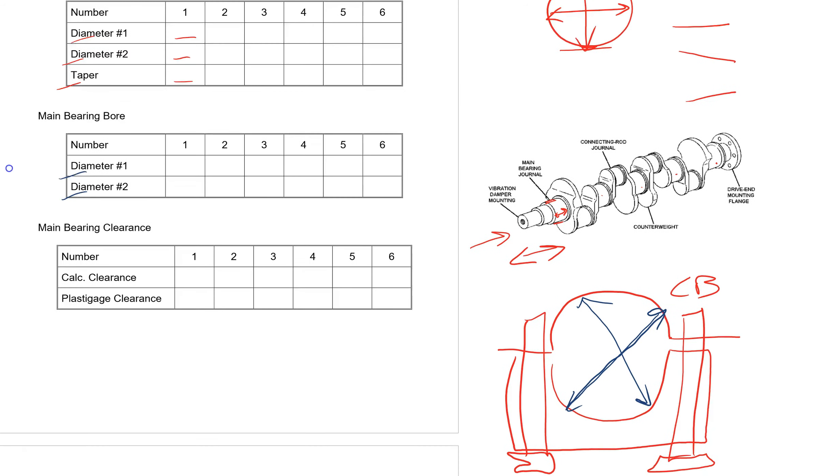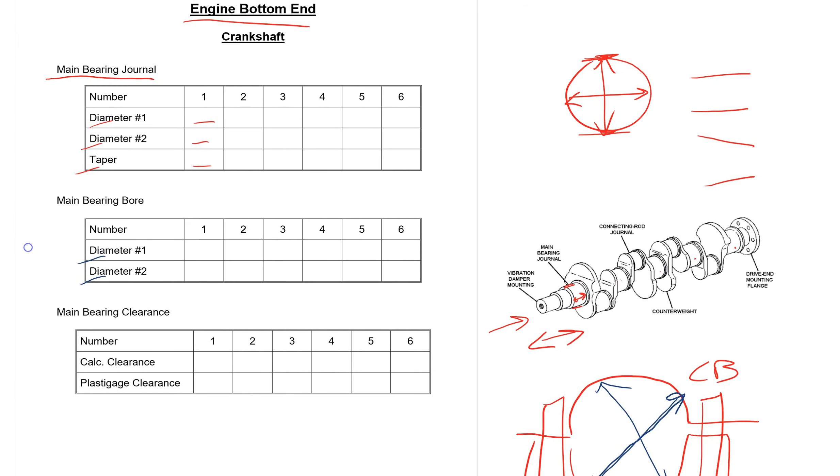And then we need to figure out the main bearing clearance. The clearance is a calculated clearance. So what you need to do is take the smallest of the main bearing journals and the largest of the main bearing bores, subtract the two, and then you write it in this space here. Plastic gauge is on another video and you can watch that one specifically.